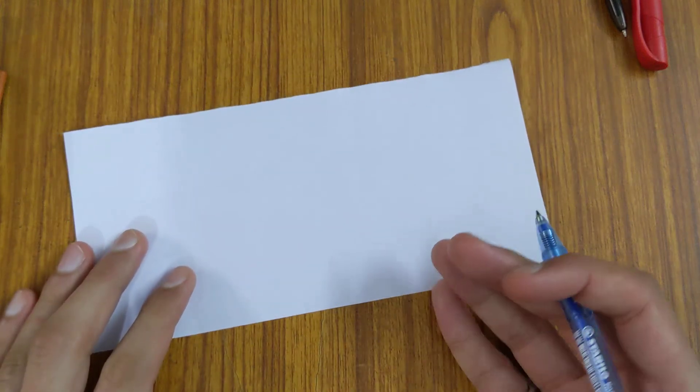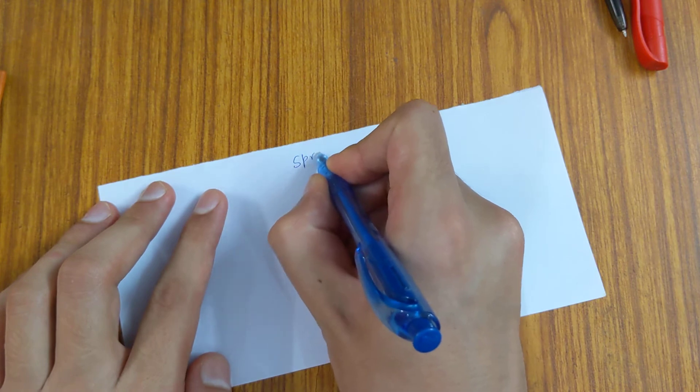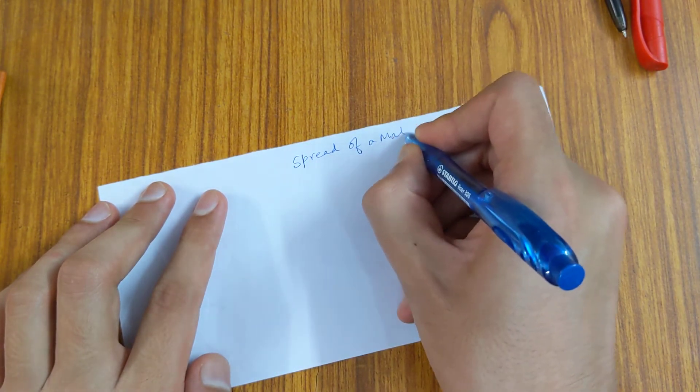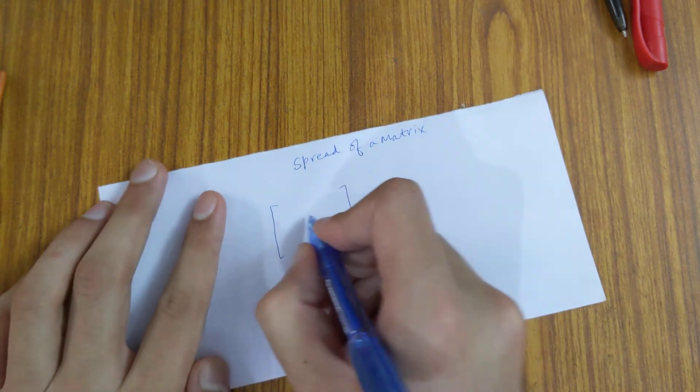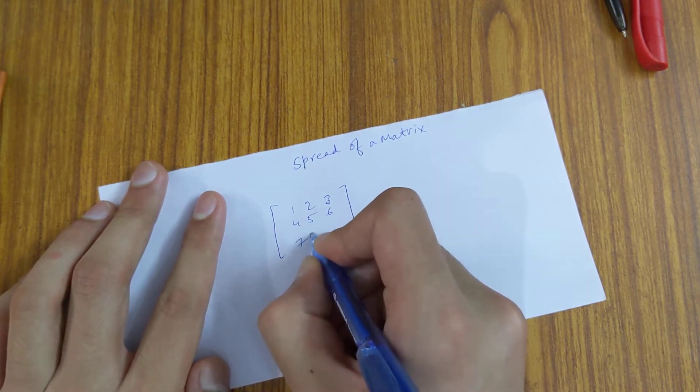Hello friends, today we'll be looking at a concept called spread of a matrix. Let's say we have a square matrix, 1 2 3 4 5 6 7 8 9, whatever.